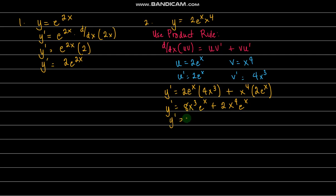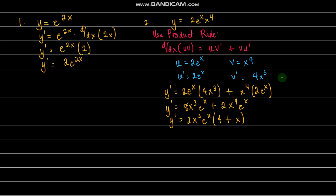You can also simplify this by factoring. We have a common factor of 2x cubed and e to the x. So 8x cubed e to the x divided by 2x cubed e to the x: x cubed cancels, e to the x cancels, so 8 divided by 2 is 4. Plus 2 divided by 2 cancels, x to the 4th divided by x cubed is x, and e to the x divided by e to the x is 1. So either form is correct.